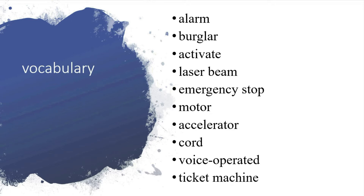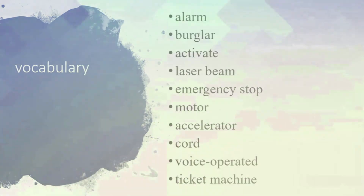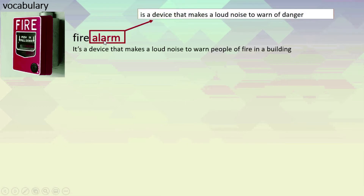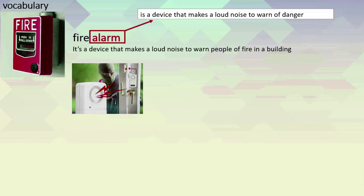Now let's take a look at them one by one. What is this? It's a fire alarm. It's a device that makes a loud noise to warn people of fire in a building. An alarm is a device that makes a loud noise to warn people of danger. Do you know any other alarm we can find in a building? We can find an alarm like this. What kind of alarm is this? It's a burglar alarm.